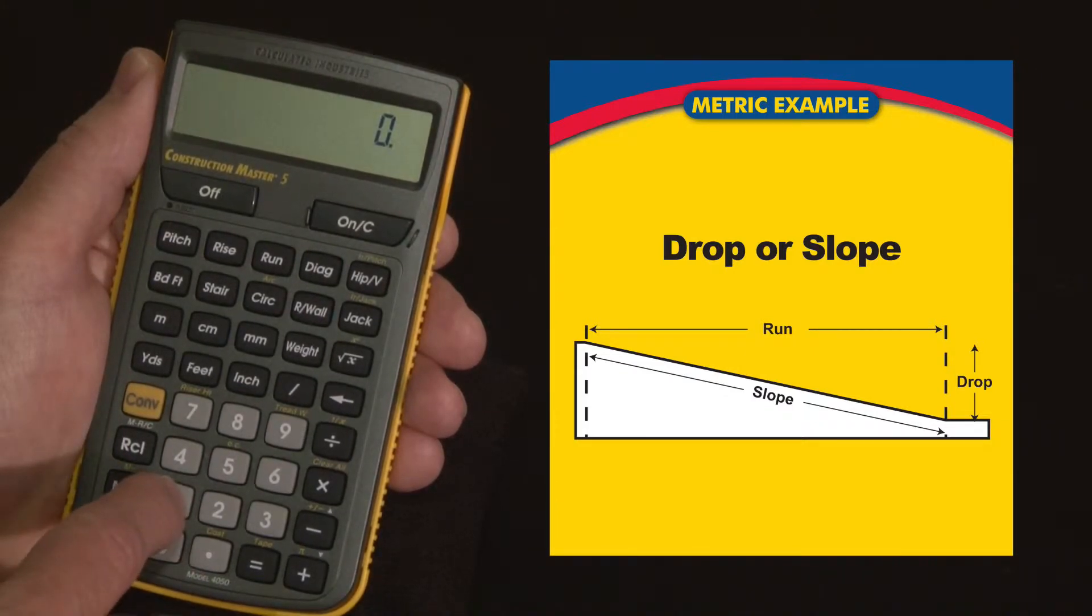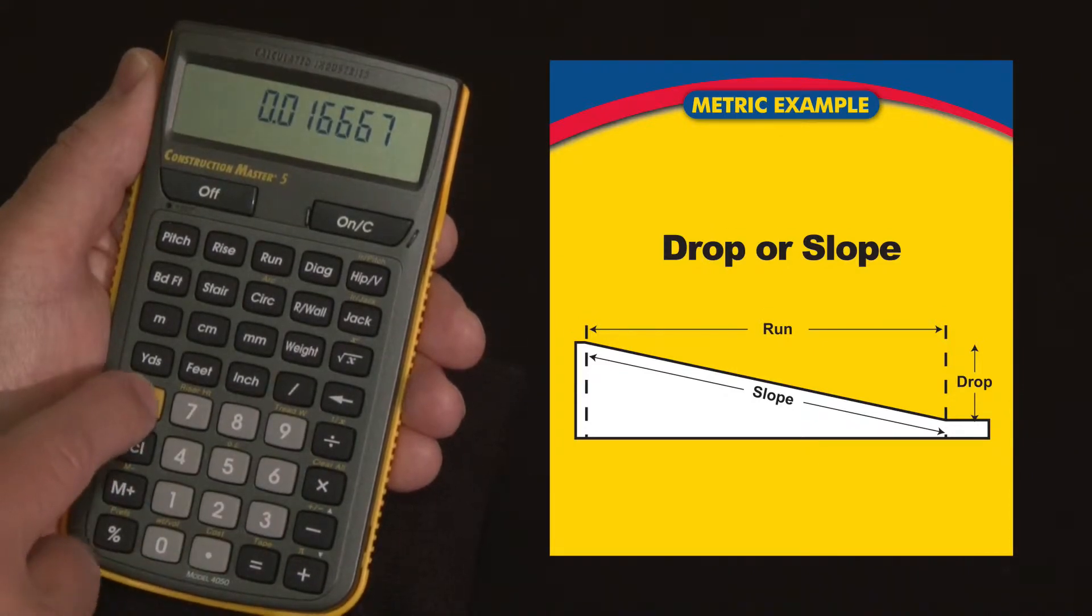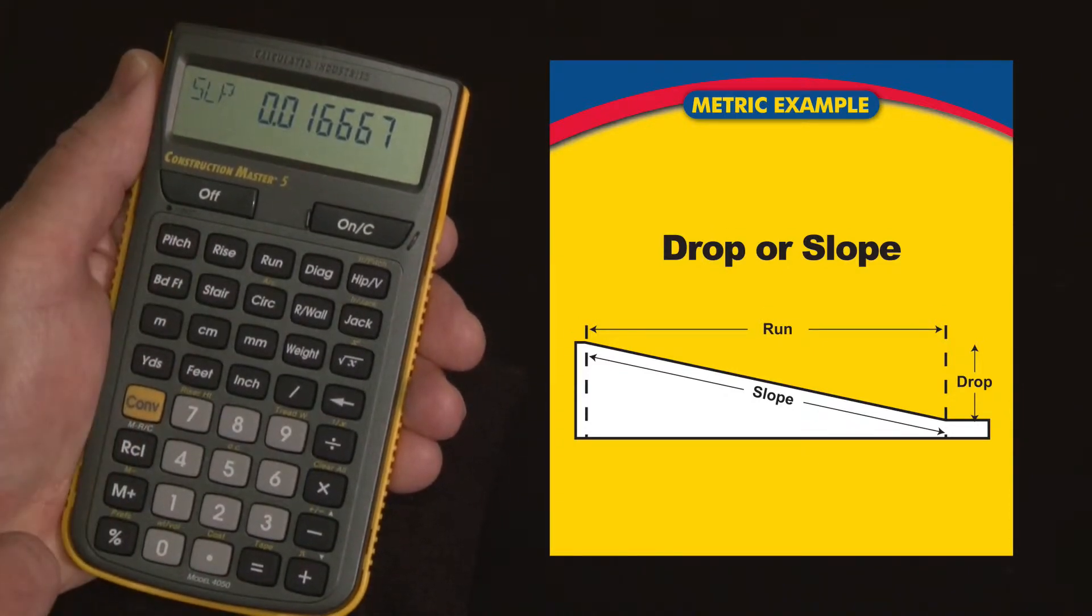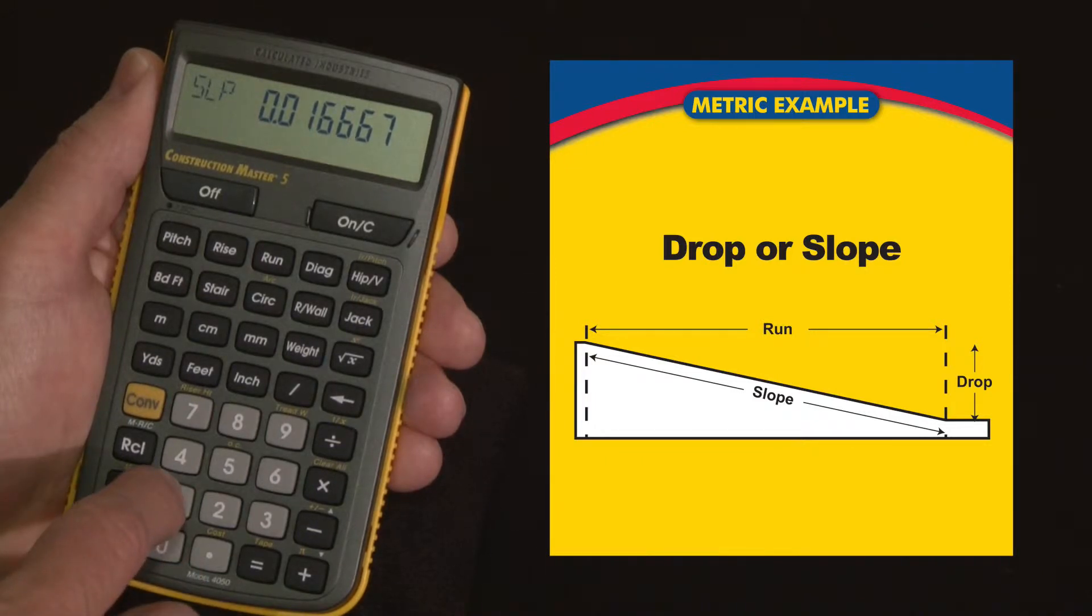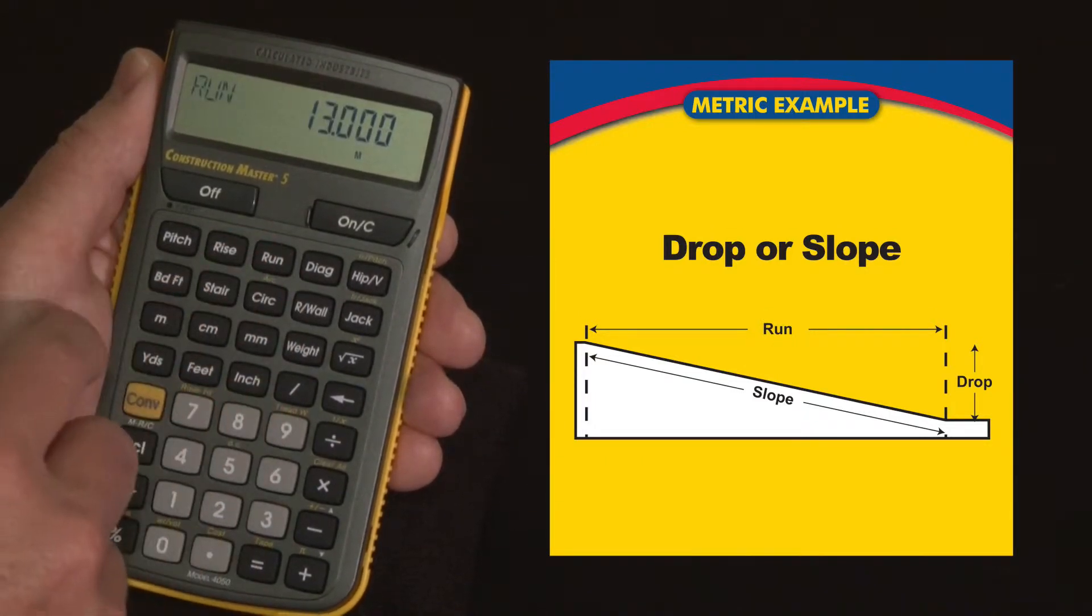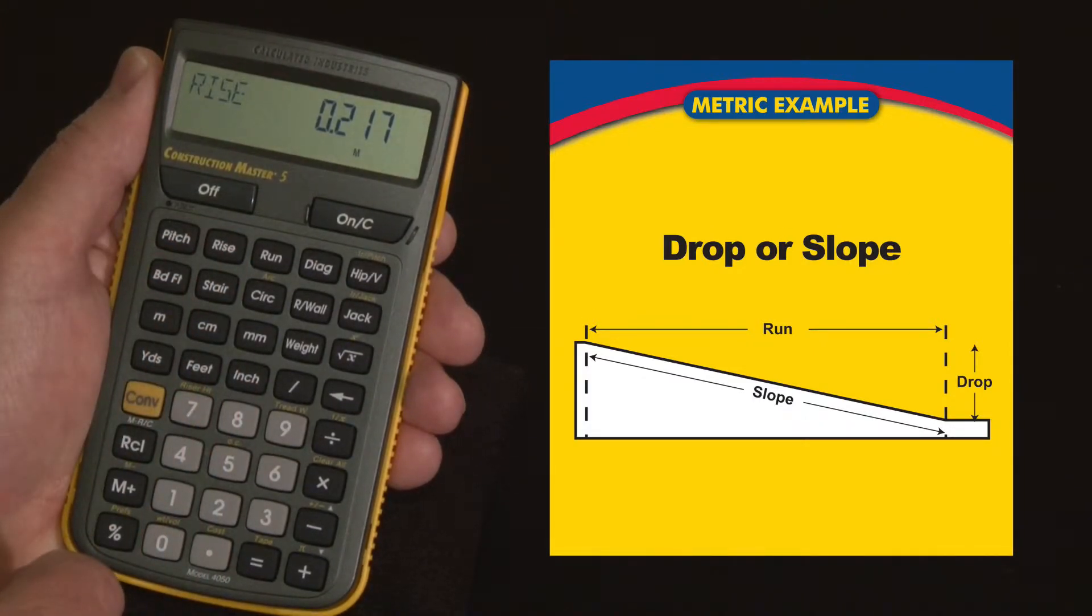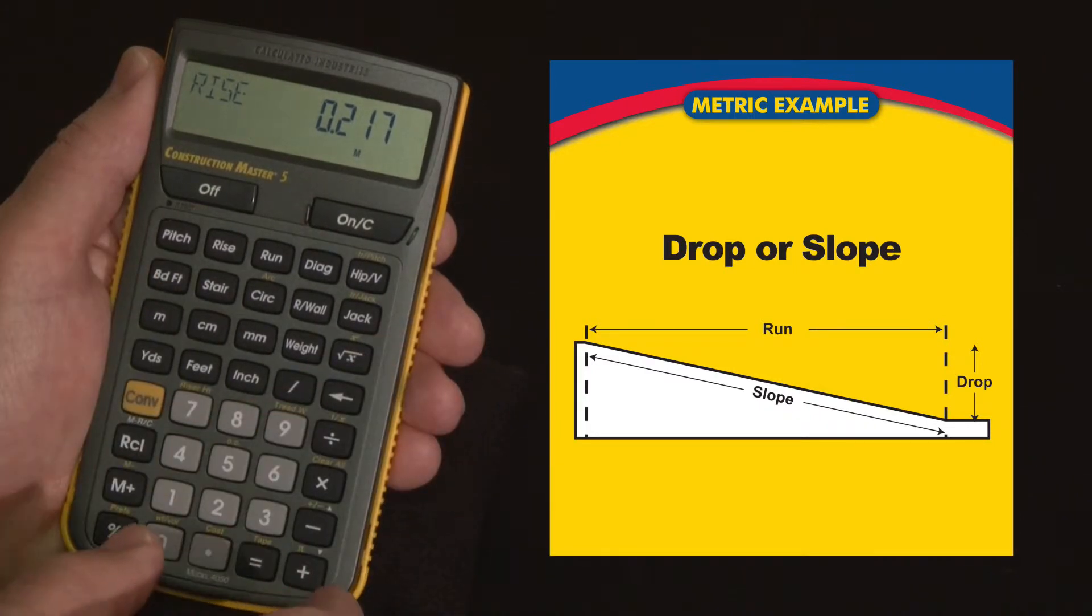So let's start off with a 1 to 60. 1 divided by 60 equals, and I'm going to hit convert to pitch and that just enters that as the slope. So now I put in the run, so let's say 13 meters is the length of this driveway and I call that the run, and I press the rise key and it tells me at the far end of this driveway it's going to be 0.217 meters or 217 millimeters lower than at this end.